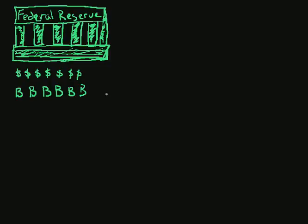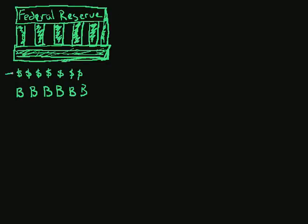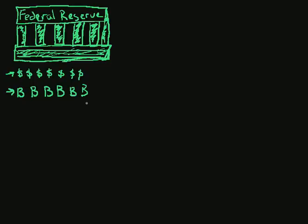Welcome to my Blackboard discussion on the Federal Reserve's open market operations, policy number two. Here's the Federal Reserve right over here. Now the Federal Reserve, like we said last time, has a bunch of dollars and a bunch of bonds sitting inside it. The Federal Reserve's goal is to change the money supply.